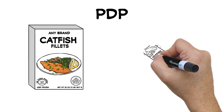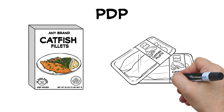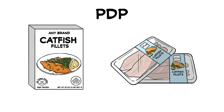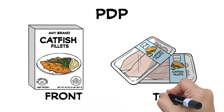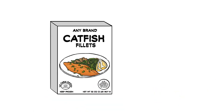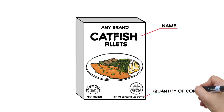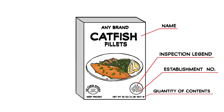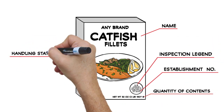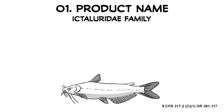The PDP is the part of a label that is most likely to be visible to the consumer on a retail shelf or in a freezer case. For wrap-around containers, boxes, or bag labels, this is the front. For trays or boxes, this is the top. The PDP must include the name of the product, net quantity of contents, the official inspection legend, number of the official establishment, and, if necessary, a handling statement.